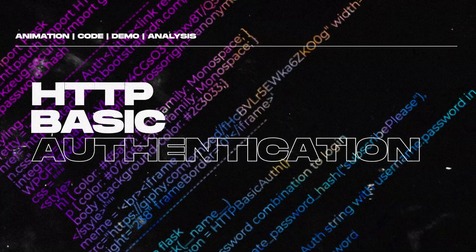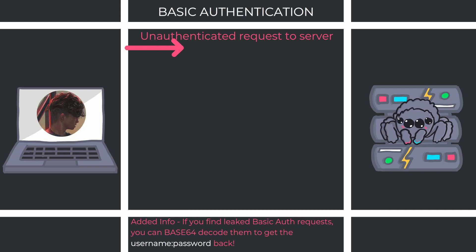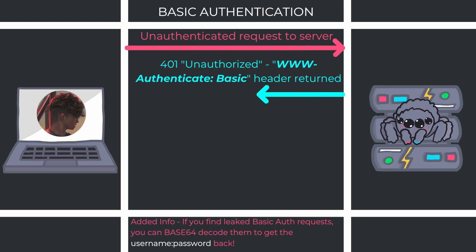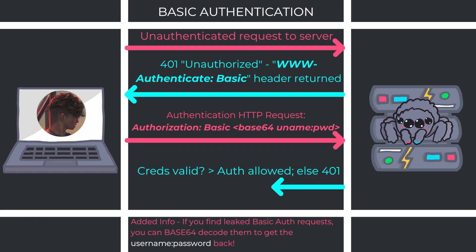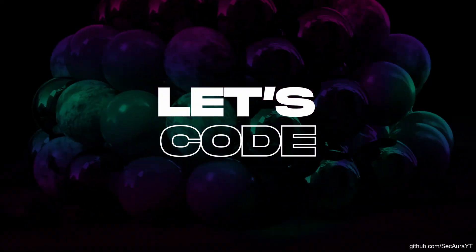Let's kick off with basic authentication. The client makes an unauthenticated HTTP request to the server. The server responds with a 401 Unauthorized and tells the client to use basic authentication. The client then provides the username and password in base64 format to the server. Following accepted credentials, the server responds with authenticated content.